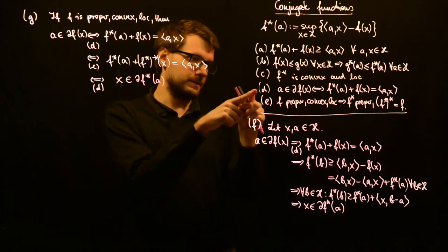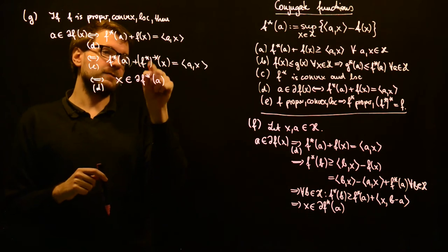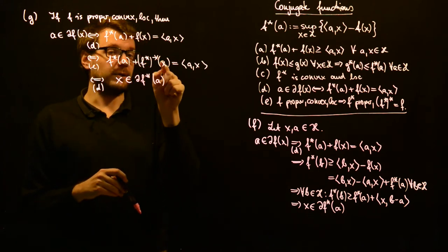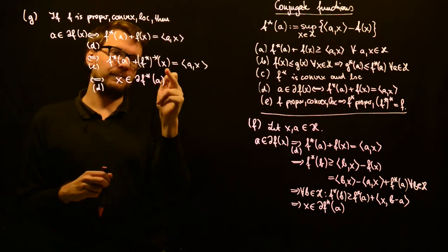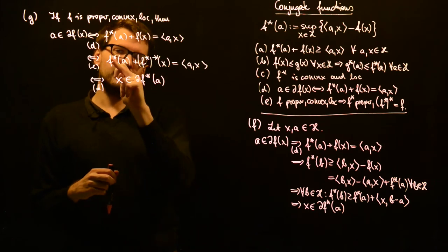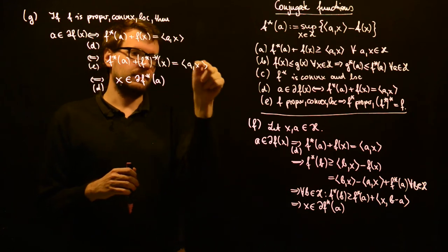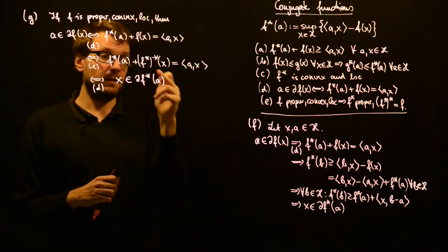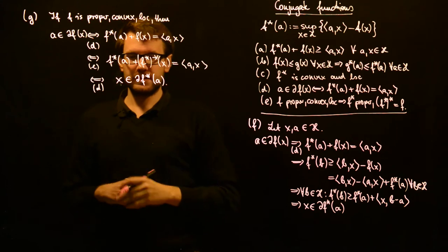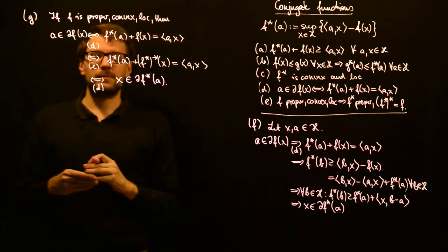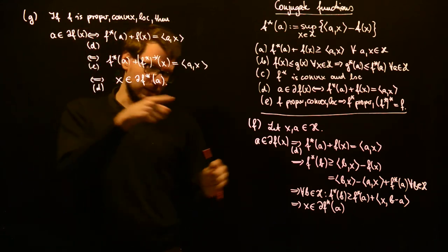If we use property D with f-star instead of f, then we get the conjugate of f-star at the point x. Switching a and x, the conjugate at point x plus f-star at point a equals the inner product of a with x, and therefore x is in the sub-differential of f-star at the point a. This is the property which holds for proper convex lower semicontinuous functions — we have the full equivalence between those two.